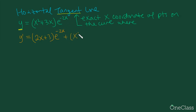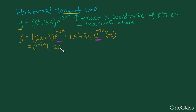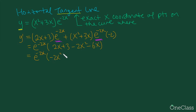We keep the first function as it is — the quadratic polynomial — and differentiate the second: e to the power of negative 2x gives a factor of negative 2. We can factor out common terms to simplify. Multiplying out (2x + 3)(−2) inside the bracket gives −2x² − 6x, so the bracket simplifies to −2x² − 4x + 3.